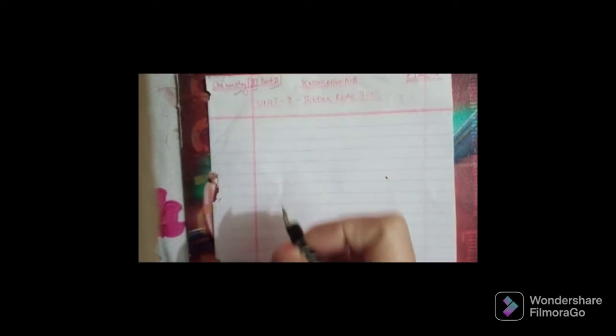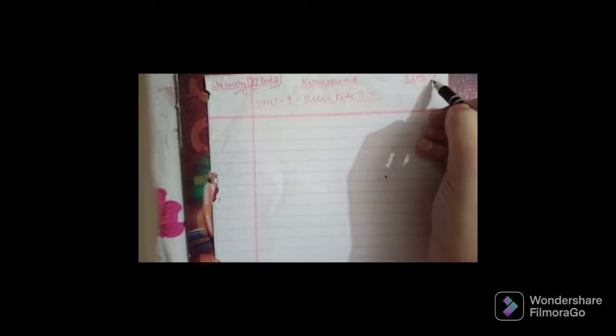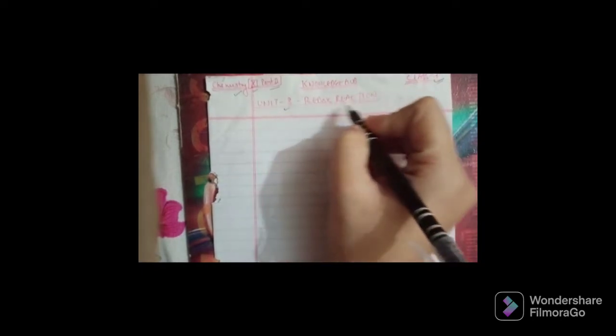Hello everyone, welcome to the channel. Today we are going to start with chemistry for class 11, part 2. This is class 7 of the series, continuing with unit 8 which is redox reactions. Before this, we had done unit 7 in the last classes.